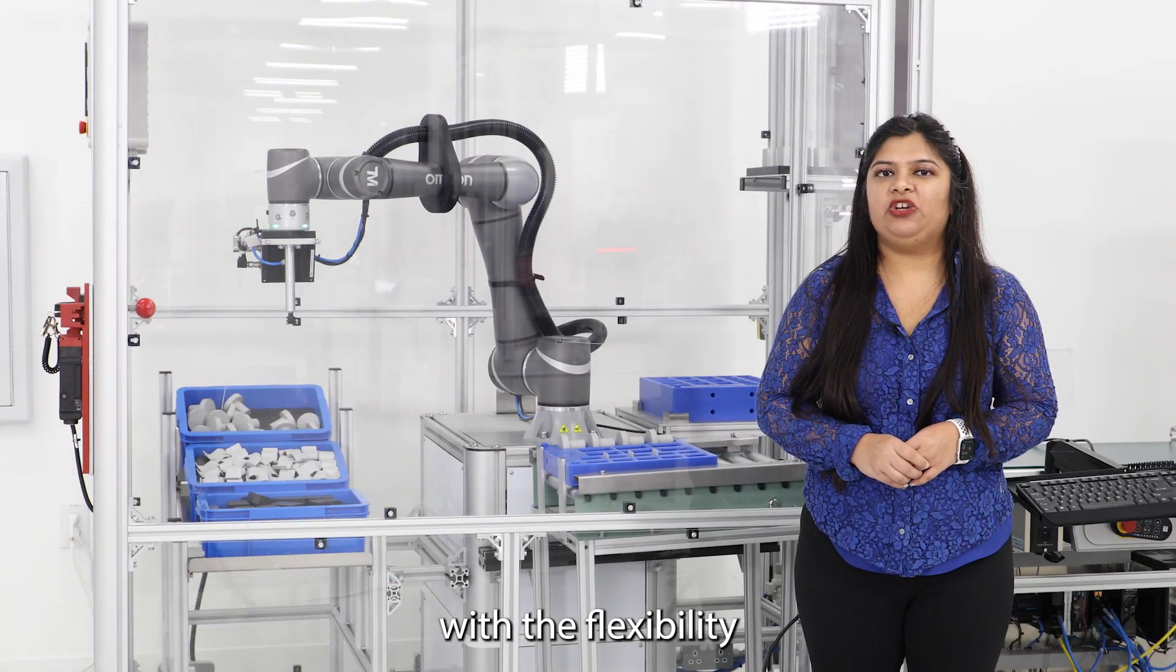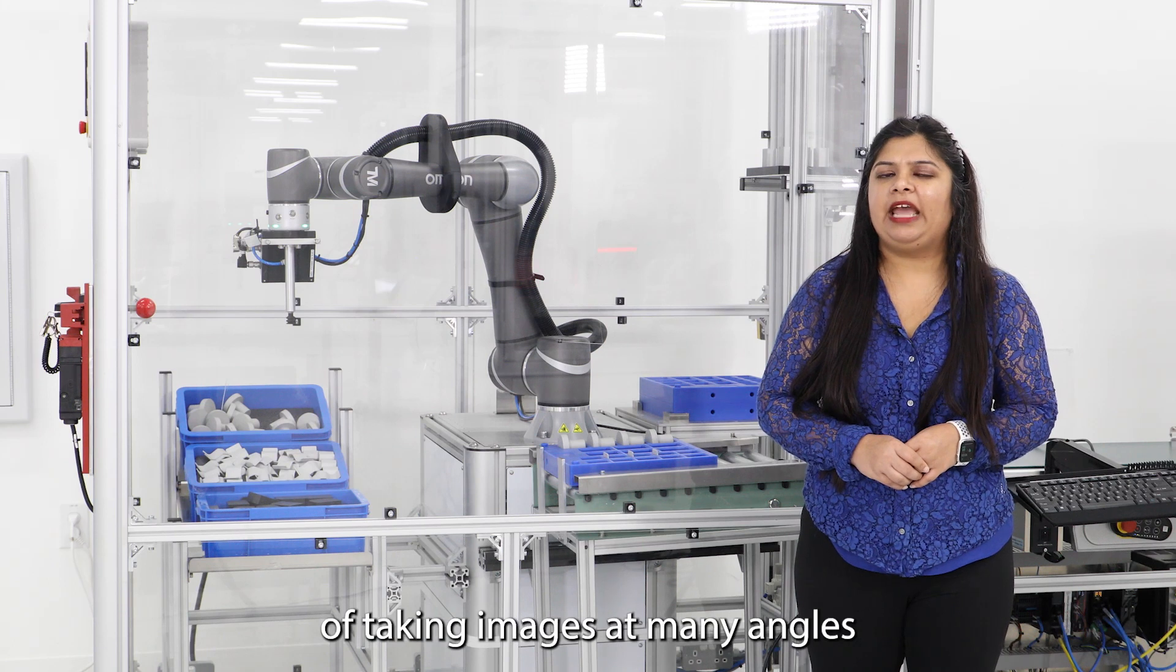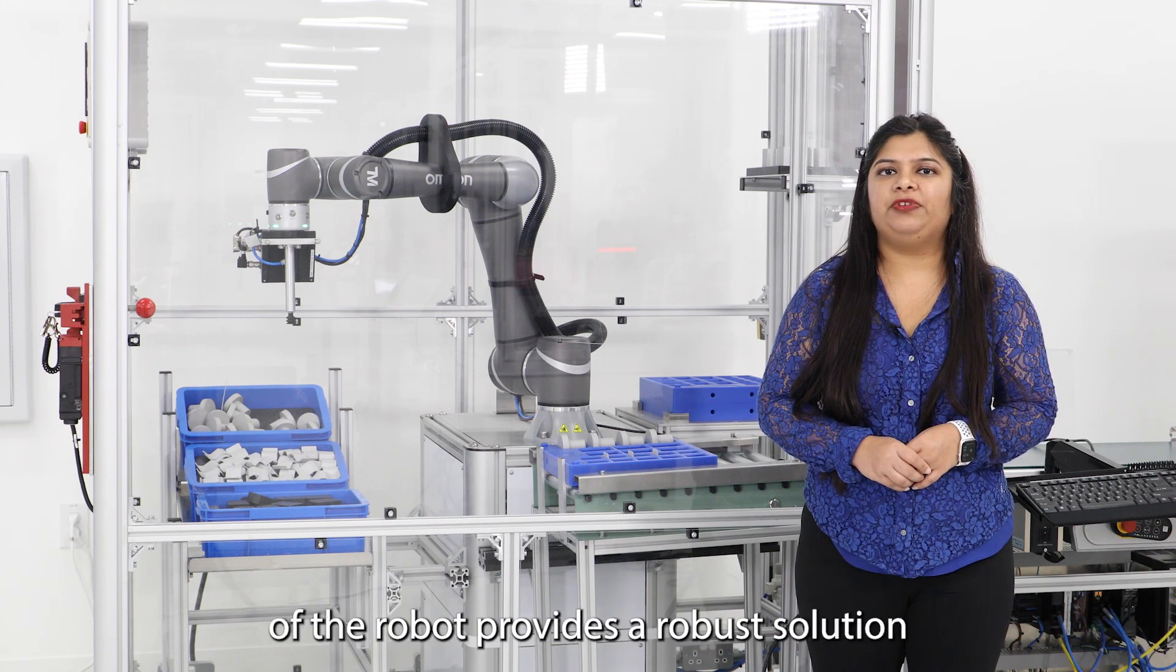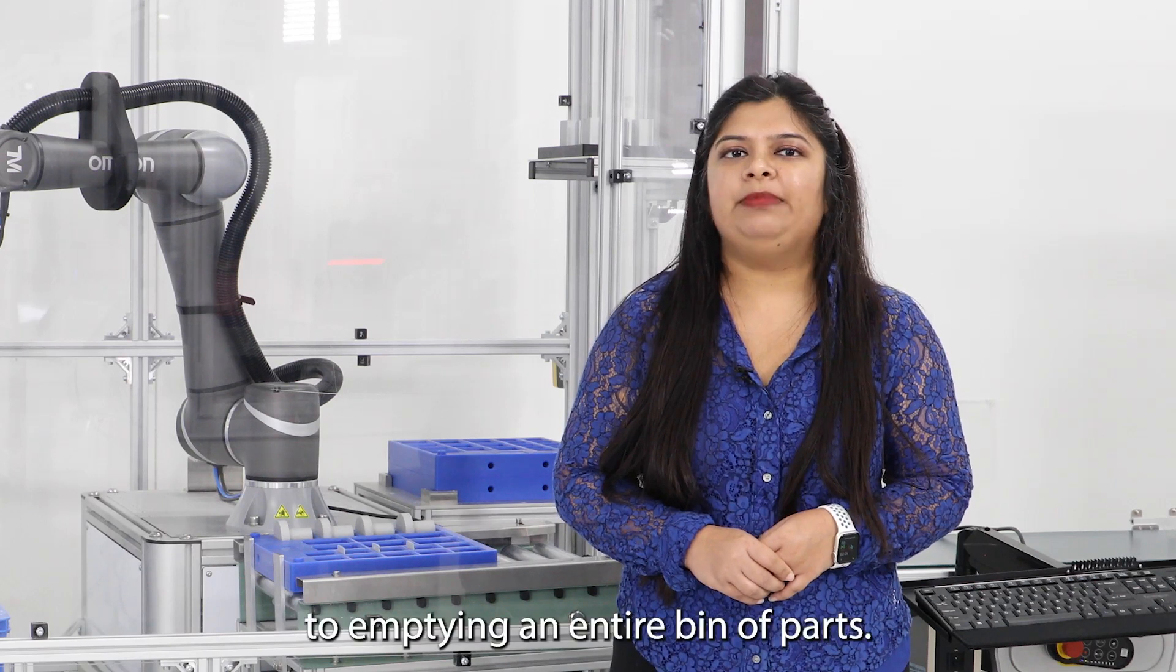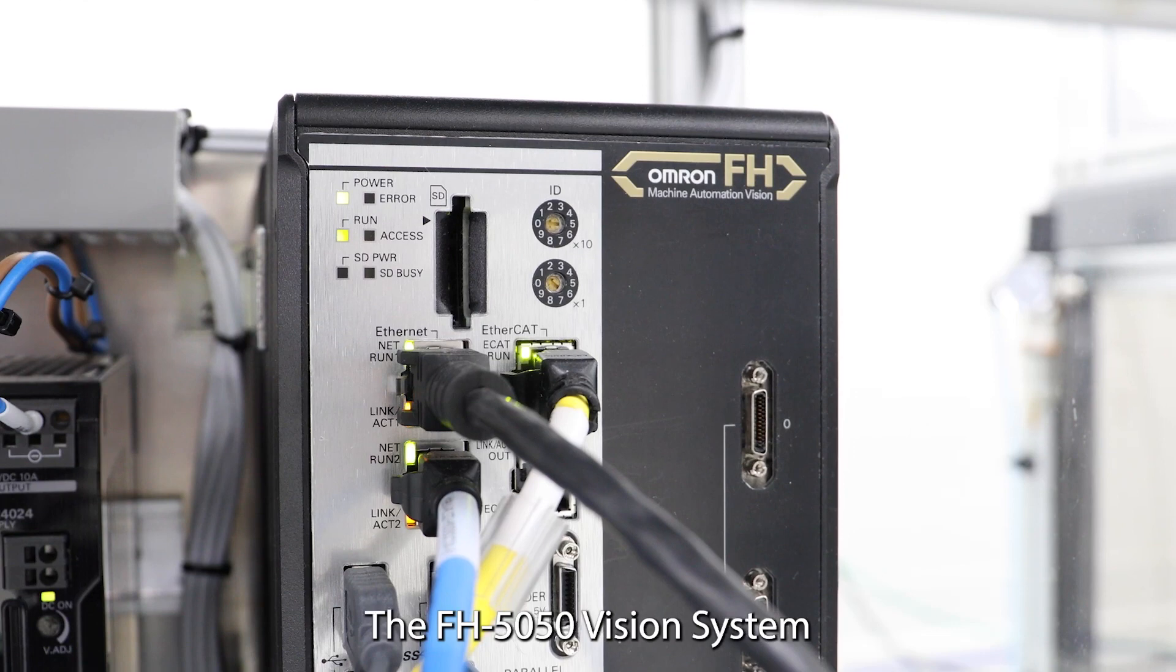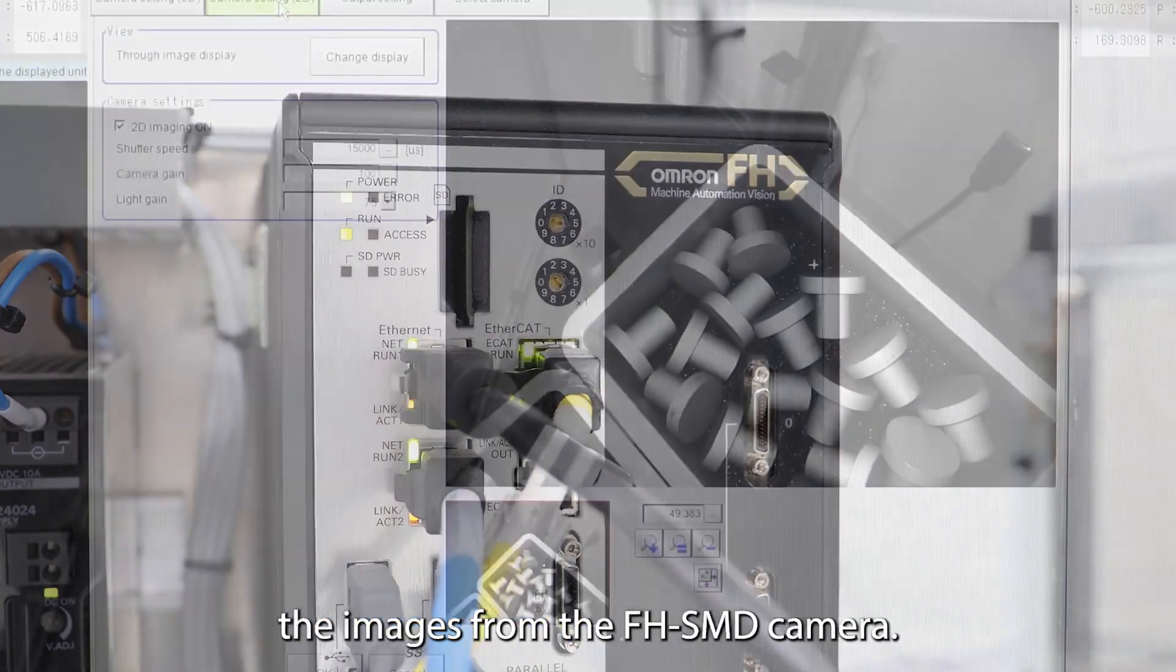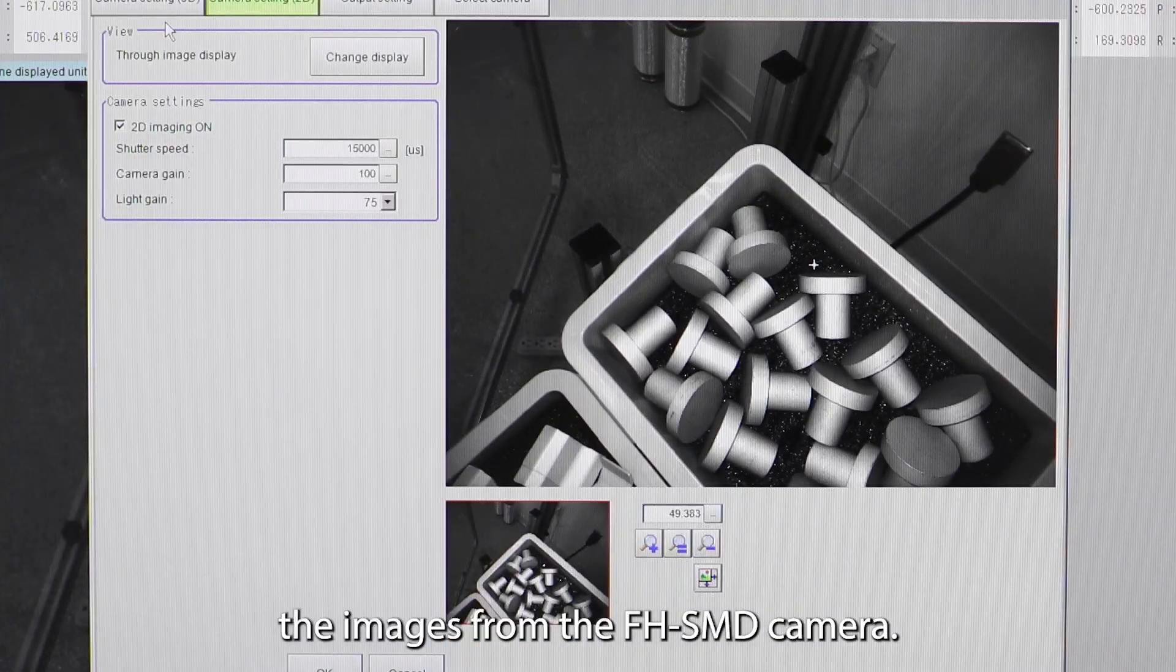This combined with the flexibility of taking images at many angles from the end effector of the robot provides a robust solution to emptying an entire bin of parts. The AFH5050 vision system controller processes the images from the AFH SMD camera.